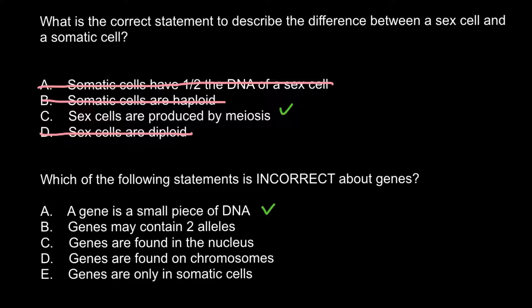Answer B: Genes may contain two alleles. This is also true. They may contain two alleles, or they may contain more alleles, or they may contain no alleles at all — so they can have only one variant. So this is a true answer.